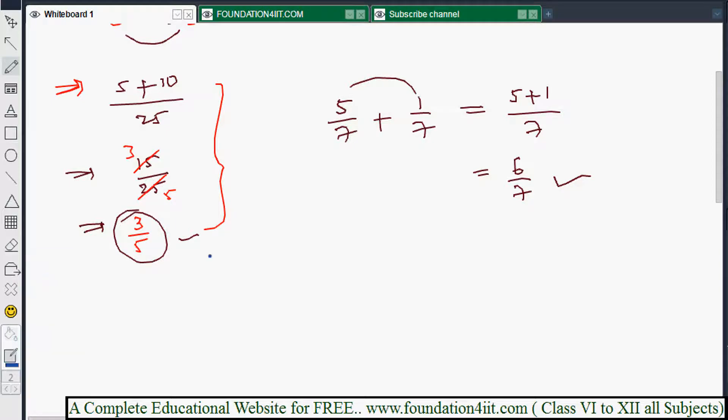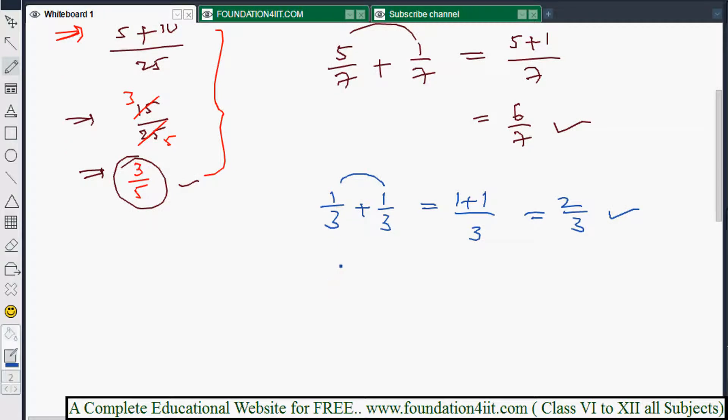Any number you can take. Same even 1 by 3 plus 1 by 3, even numerators and denominators are also same. Same process. First you need to add the numerators, this 1 plus 1, because whenever denominator is same, that is 3. 1 plus 1 is 2 by 3. So 2 by 3 is the solution.